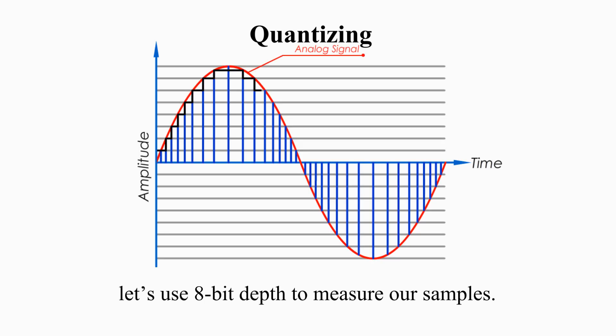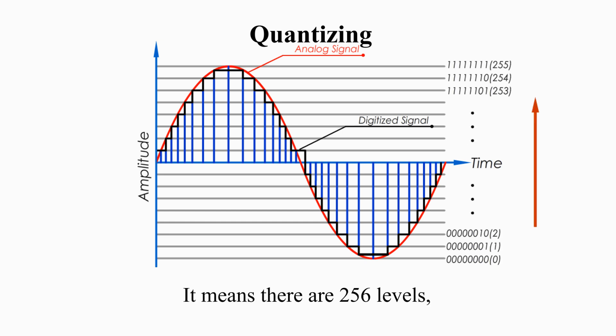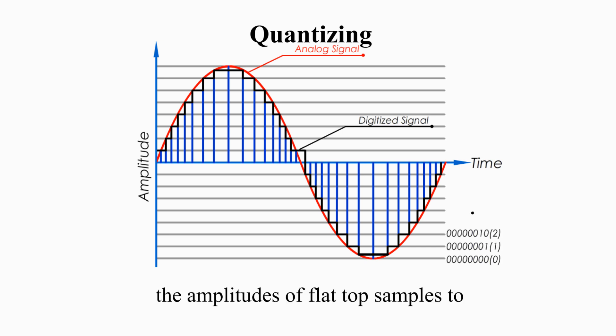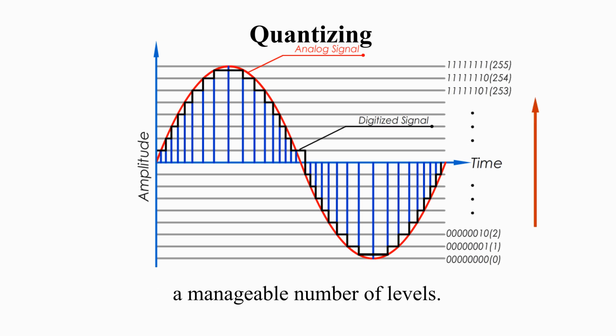In this example, let's use 8-bit depth to measure our samples. It means there are 256 levels, and each horizontal line represents each level, and each level is associated with a specific bit value. Quantizing process is the process of rounding off the amplitudes of flat-top samples to a manageable number of levels. We try to make each sample match each level, because each level has a specific bit value.